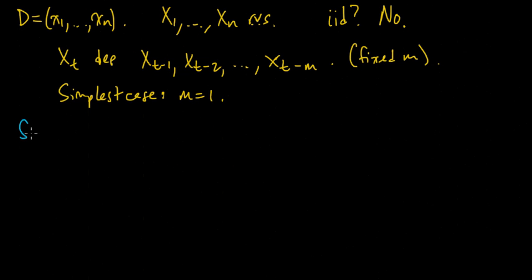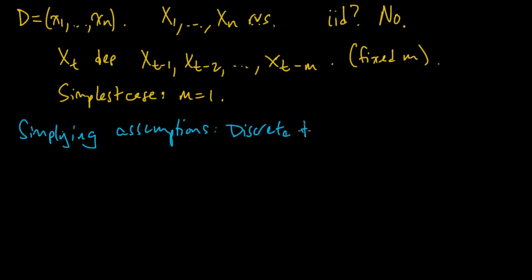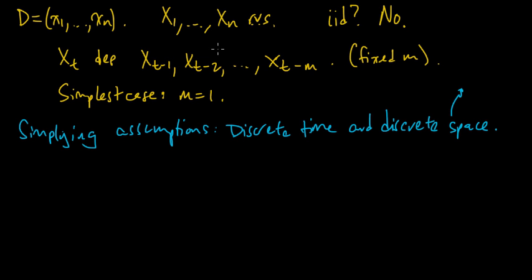We'll make two simplifying assumptions in addition to the basic Markov assumption. We'll assume discrete time, which we were already assuming, and discrete space — by space here I mean the set that the random variables Xi take values in. So Xi will be a discrete random variable.